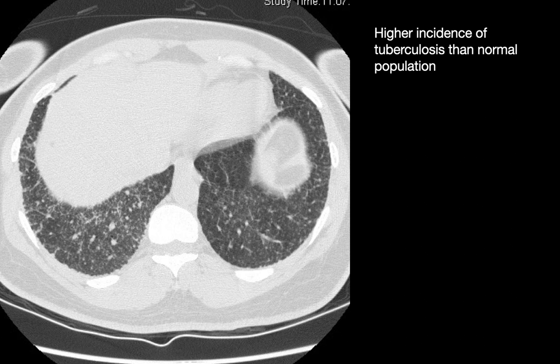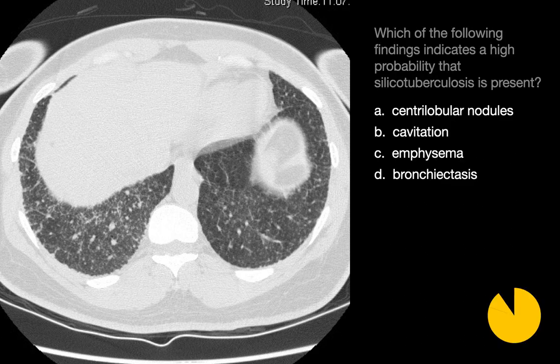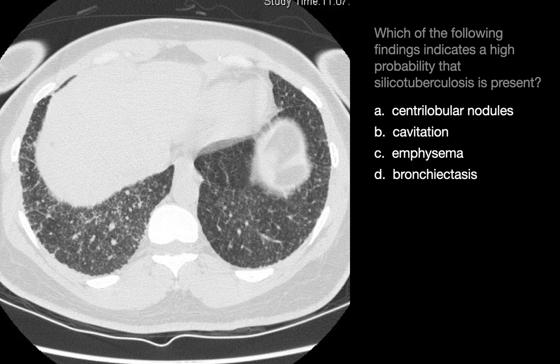With silicosis, we usually may expect a higher incidence of TB than in the normal population. Which leads us to the next question: which of the following findings indicates a high probability that silicotuberculosis is present? The imaging feature we're looking for here is cavitation.